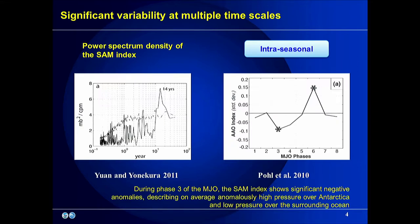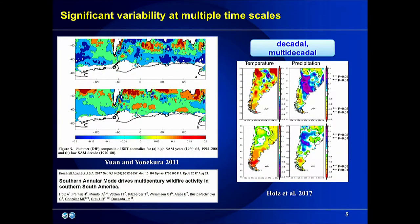On intraseasonal timescale, it was found that during phase three of the MJO, the SAM index shows significant negative anomalies, describing on average anomalous high pressure over Antarctica and low pressure over the surrounding oceans. On decadal and multi-decadal timescale, the SAM has covariability with the underlying Southern Ocean, and a recent study found that wildfire activity in southern South Africa is related to SAM activity on multi-decadal timescale.